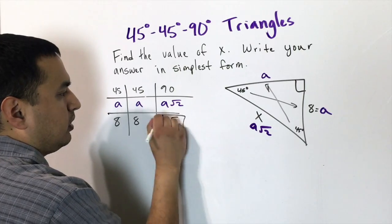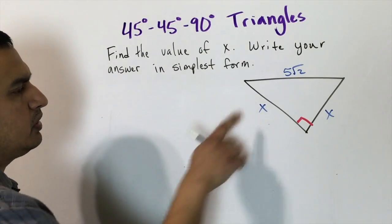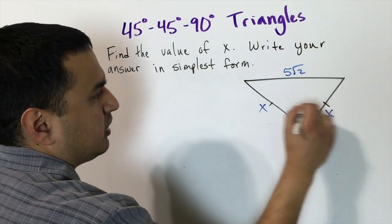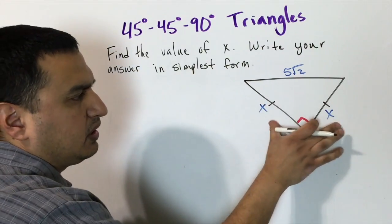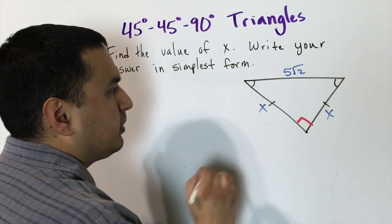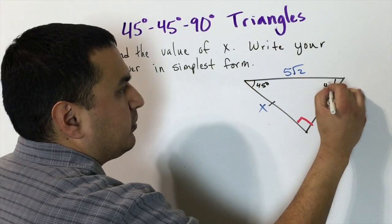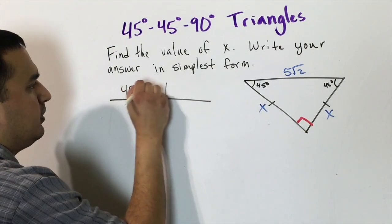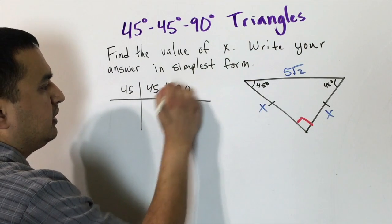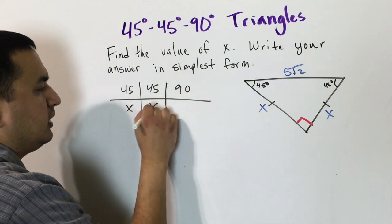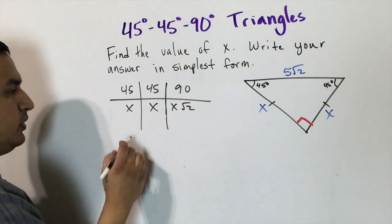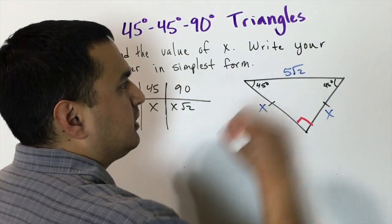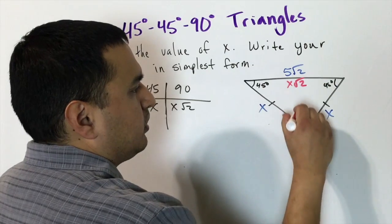Here's another 45-45-90 problem. The two legs are both labeled x, which tells us the sides are congruent, confirming the 45-45-90 setup. We make the table: 45, 45, 90 correspond to x, x, x√2. The hypotenuse is across the right angle, so it equals x√2. The diagram gives us 5√2 for the hypotenuse side.